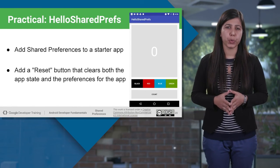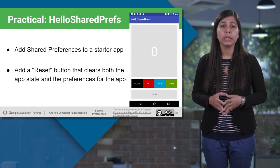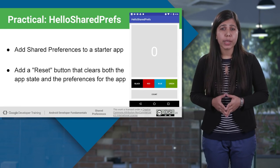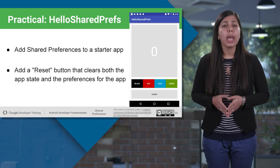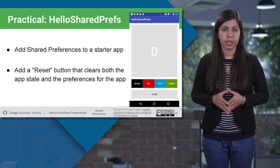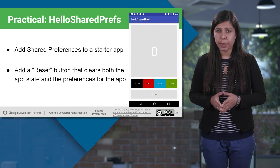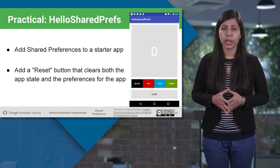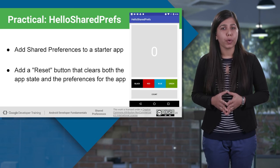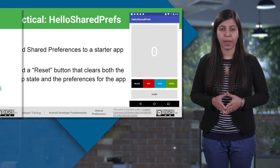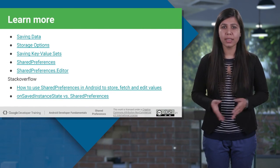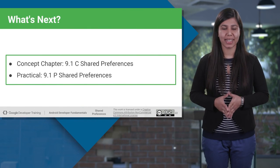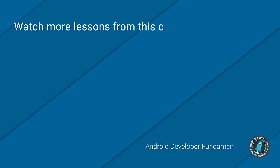Here is an app overview of what you are going to work on in your practical, where you will start with the starter app and add Shared Preferences. You will also add a reset button that sets both the count and the background color to the default and clears the preferences file. Learn more from the provided links and do the practical now. Thanks for watching.